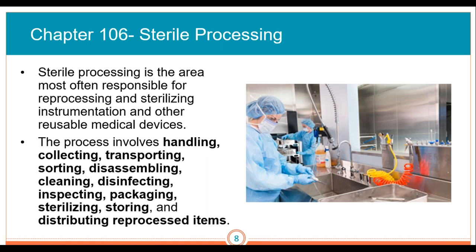Chapter 106: sterile processing. Sterile processing is the area most often responsible for reprocessing and sterilizing instrumentation and other reusable medical devices. If you've never been in a sterile processing department, reach out to a local hospital. The process involves handling, collecting, transporting, sorting, disassembling, cleaning, disinfecting, inspecting, packaging, sterilizing, storing, and distributing reprocessed items. They are really the heartbeat of the hospital — they keep all of our operating rooms and procedural areas running.